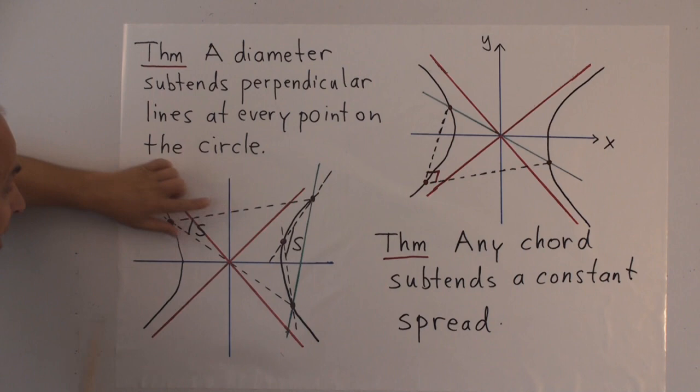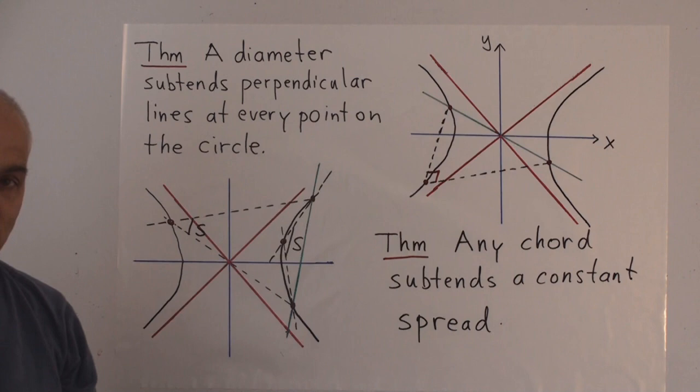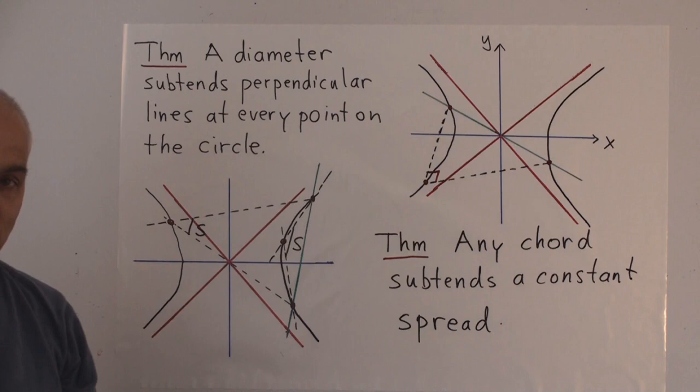Even if it's over here, it has still the same value. So any chord subtends a constant spread.